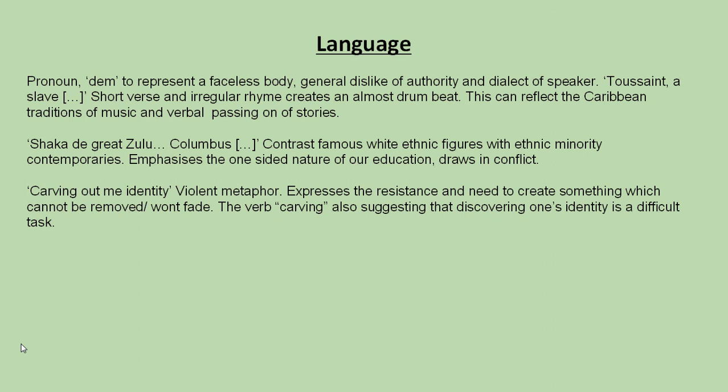In terms of language, the pronoun 'dem' represents a faceless body and a general dislike of authority, reflecting the dialect of the speaker. The short verse and irregular rhyme create an almost drum-beat effect, reflecting Caribbean traditions. The contrast of famous white historical figures like Columbus with ethnic minority figures such as Shaka the great Zulu emphasizes the one-sided nature of education. 'Carving out the identity' is a violent metaphor expressing resistance and the need to create something that cannot be removed — the verb 'carving' suggests that discovering one's identity is a difficult task.